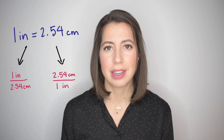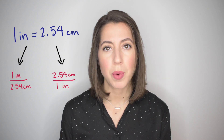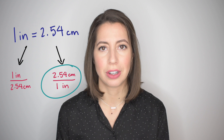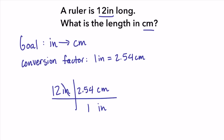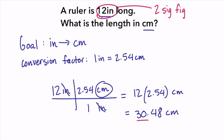Note that two conversion factors can be written from one equivalent statement; we use the one that causes the appropriate units to cancel out. For this example, we want inches to cancel out, so we use the conversion factor with inches on the bottom. The inches cancel and we're left with centimeters. We multiply across the top: 12 times 2.54, giving 30.48 centimeters. Checking significant figures, our given has two, so we round to two significant figures. The four rounds that zero down, giving 30. — our final answer is 30. centimeters.